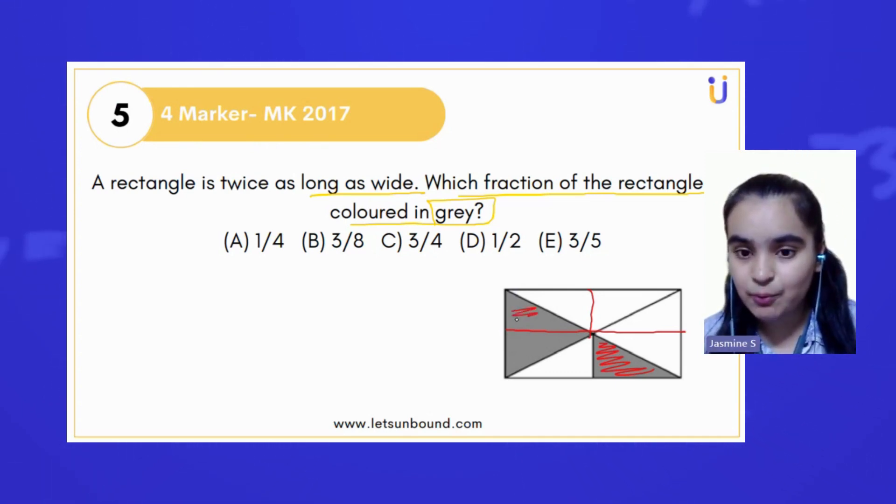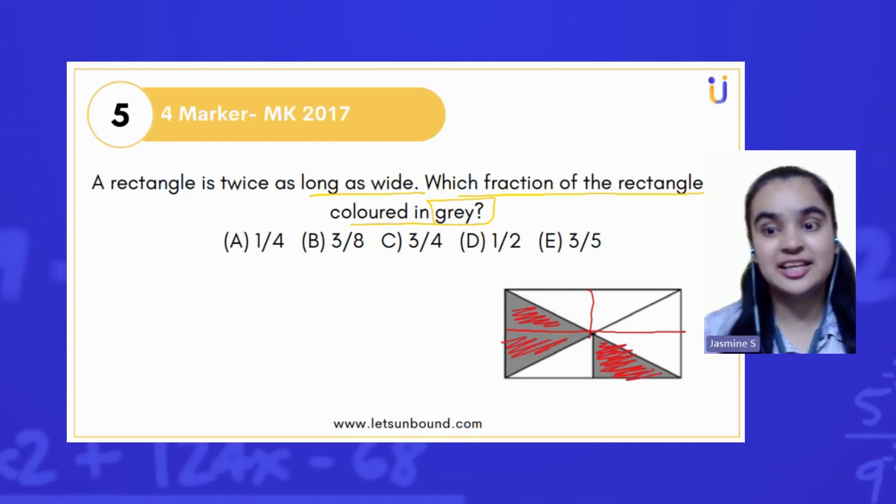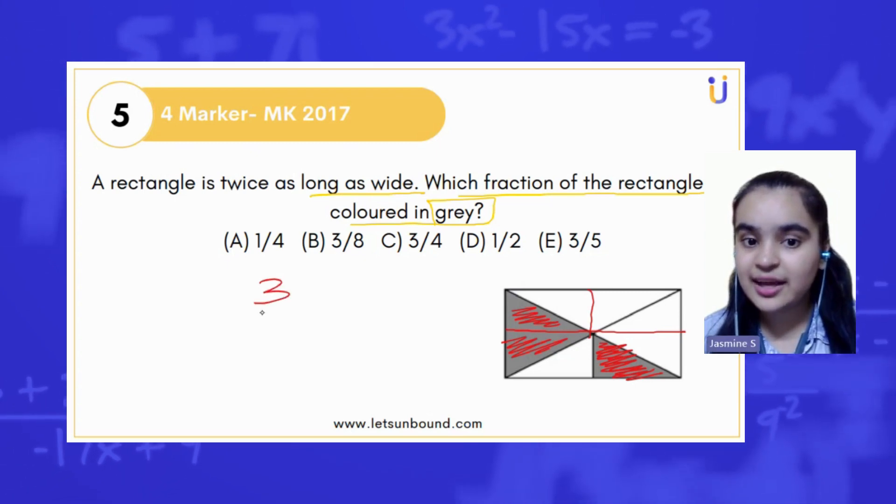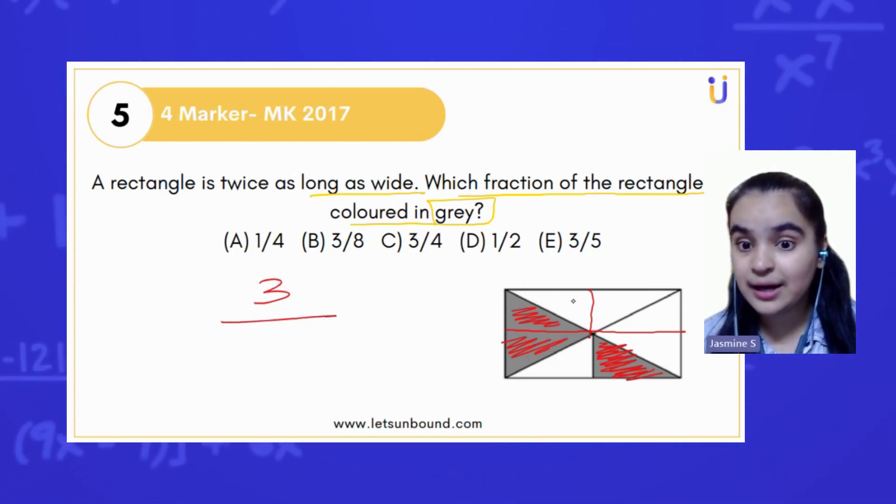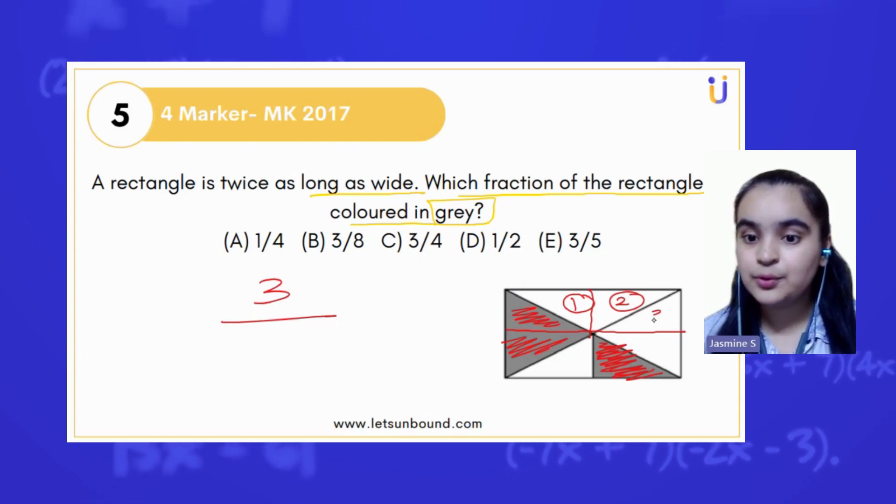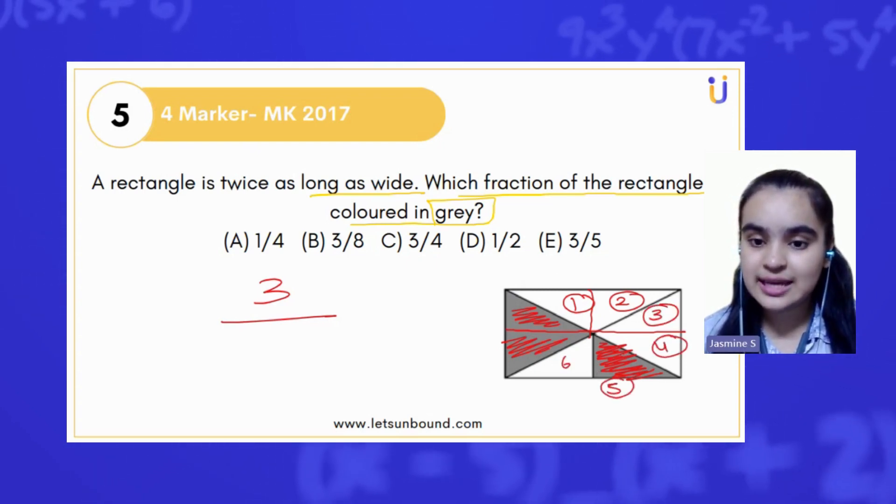Now we have one, two, and three parts colored in gray. And in total, we have how many parts? One, two, three, four, five, six, seven, and eight.